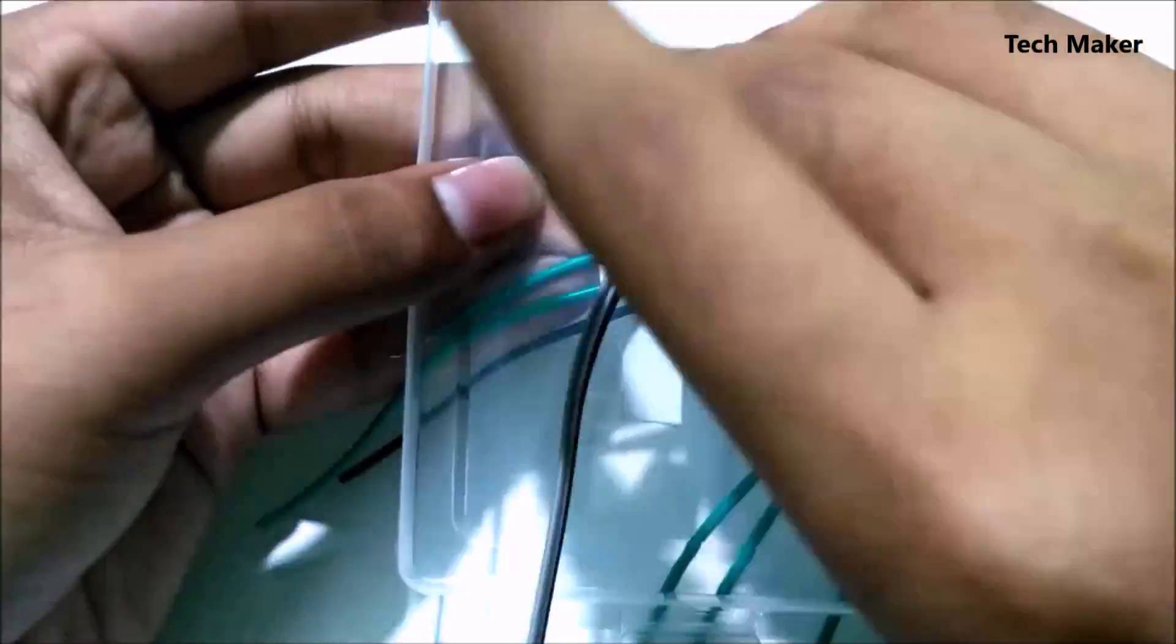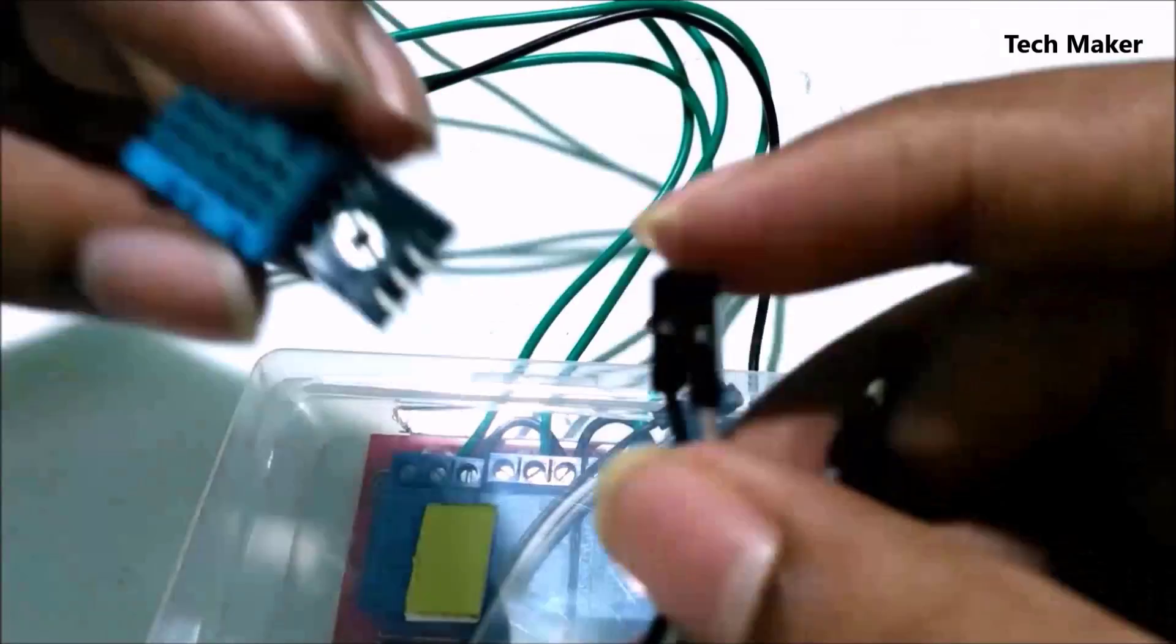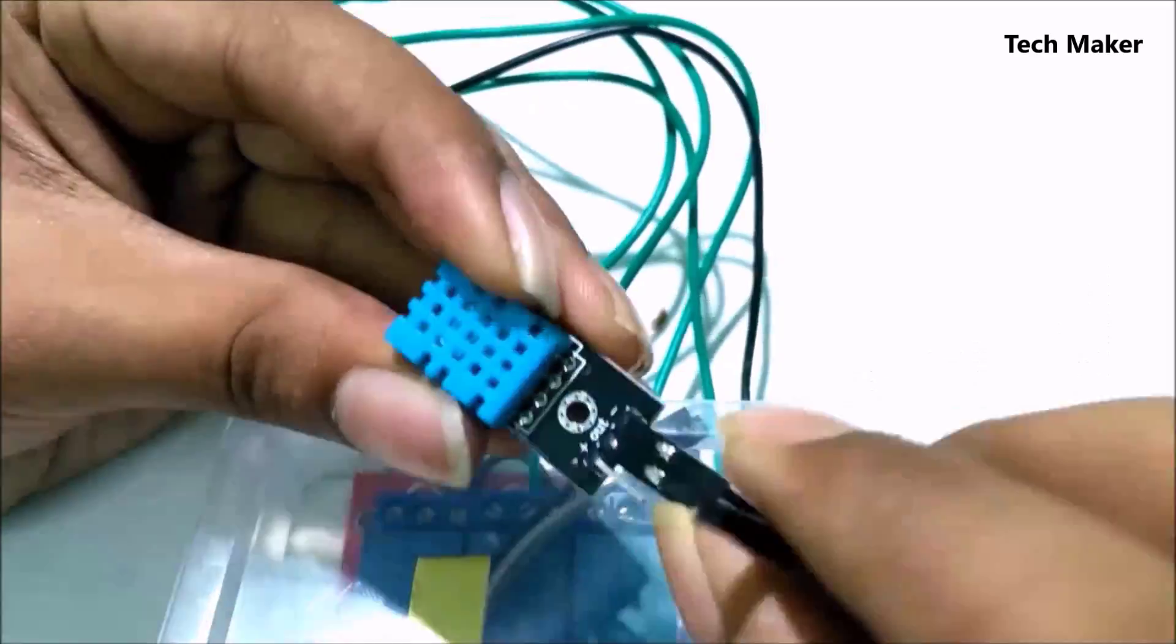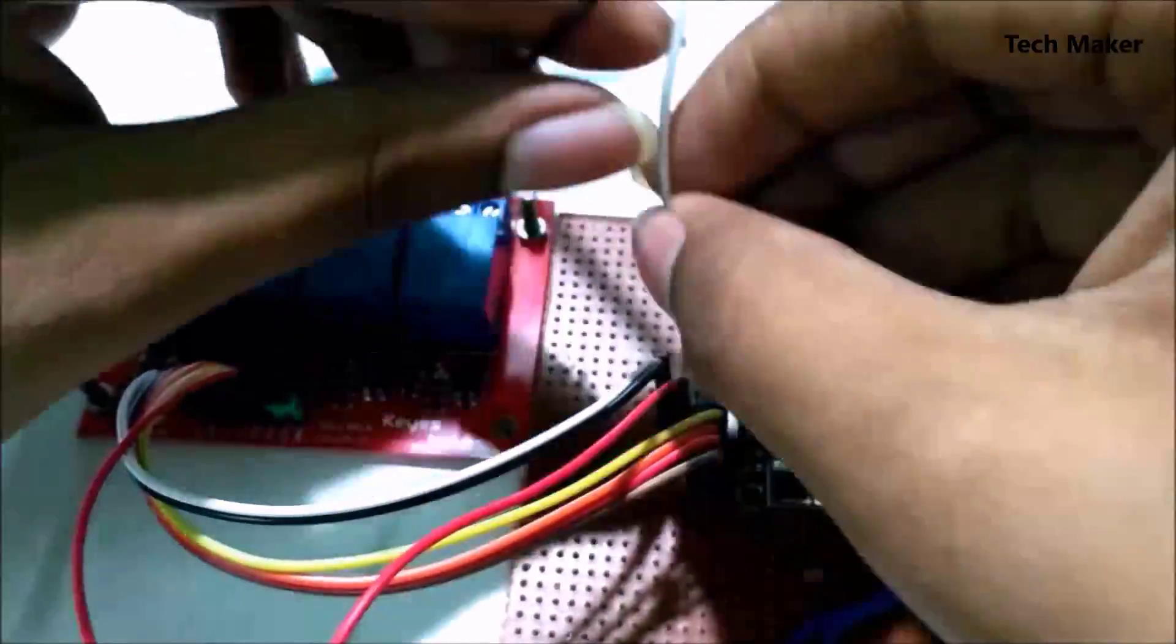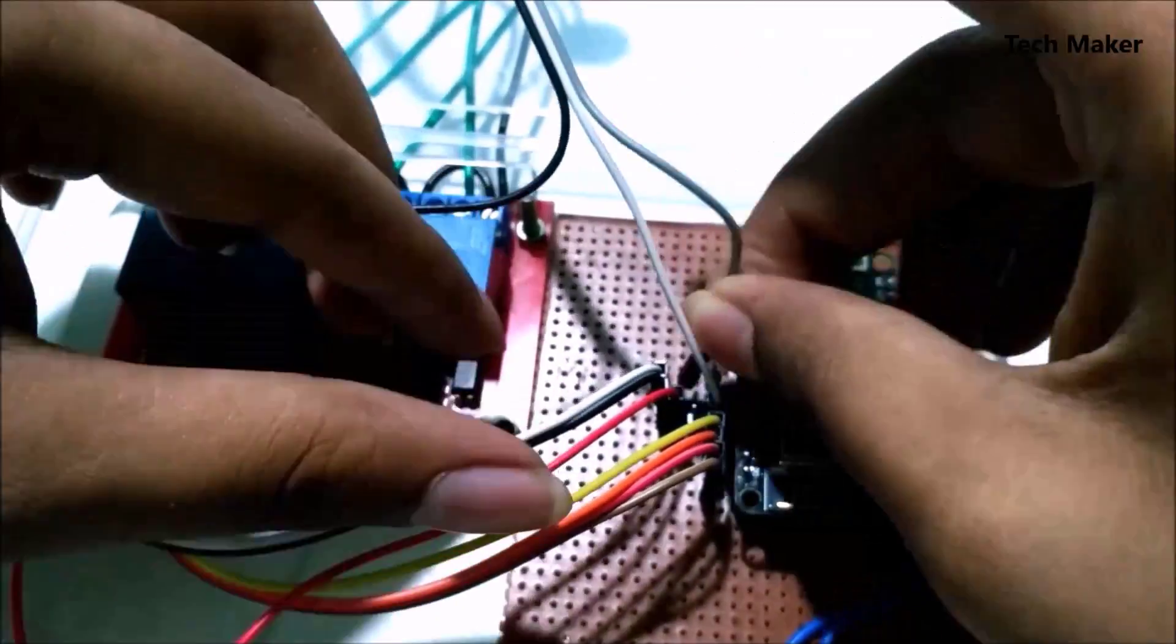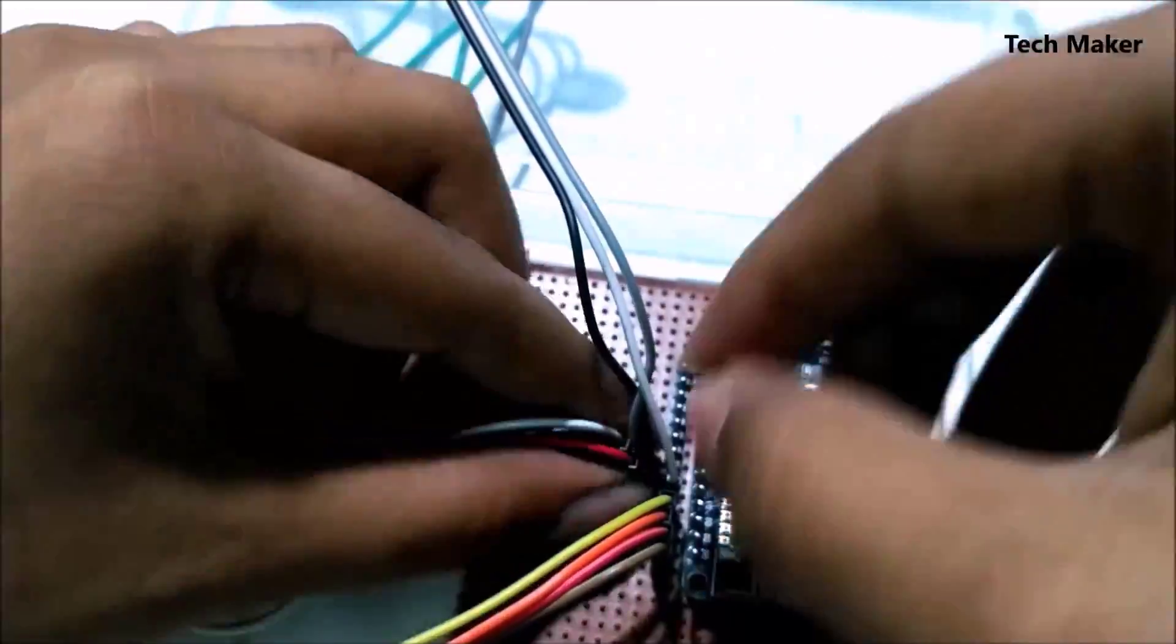These are the wires for the DHT11 module. Now wire the DHT11 module and connect their wires to the ESP8266 NodeMCU module as per the pins declared in the program.